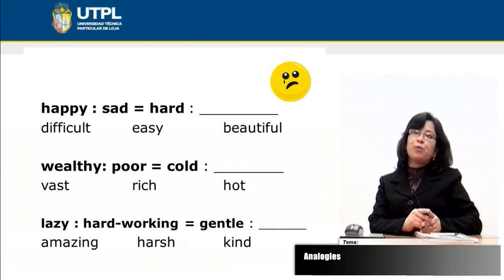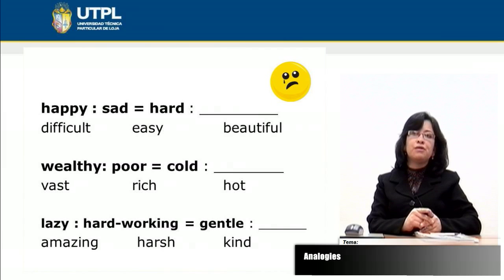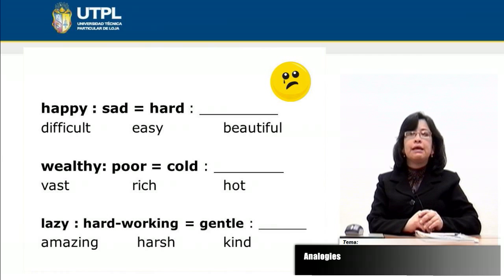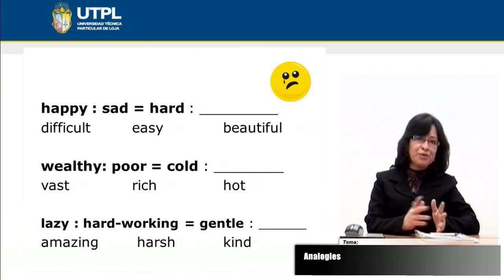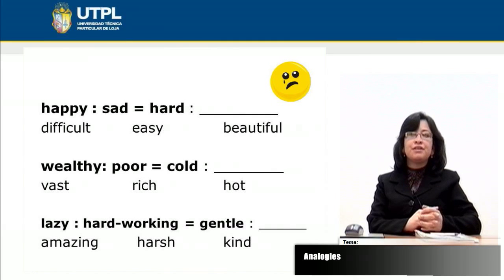In the second example, we have 'poor' is for 'healthy,' and we need to find the correct word to complete the second pair with 'cold.' The options are vast, rich, and hot. Again we have antonyms because 'poor' is the antonym of 'wealthy.' So we have to look for the antonym of 'cold.' You know that 'hot' is the opposite of 'cold,' so the correct word is 'hot.'